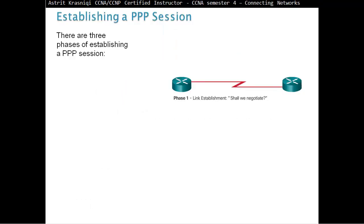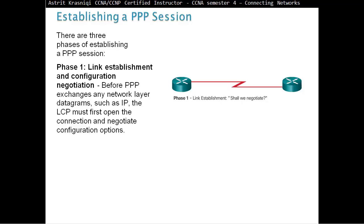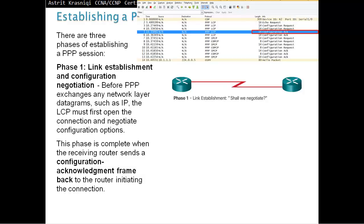Establishing a PPP session. There are three phases to establish a PPP session. First phase is link establishment and configuration negotiation. Before PPP exchanges any network layer datagram, such as IP or IPv6, the LCP must first open the connection and negotiate configuration parameters or options. Like authentication, compression, all that will be negotiated. Or quality will be negotiated by LCP. This phase is complete when the receiving router sends a configuration acknowledgement frame back to the router initiating the connection.